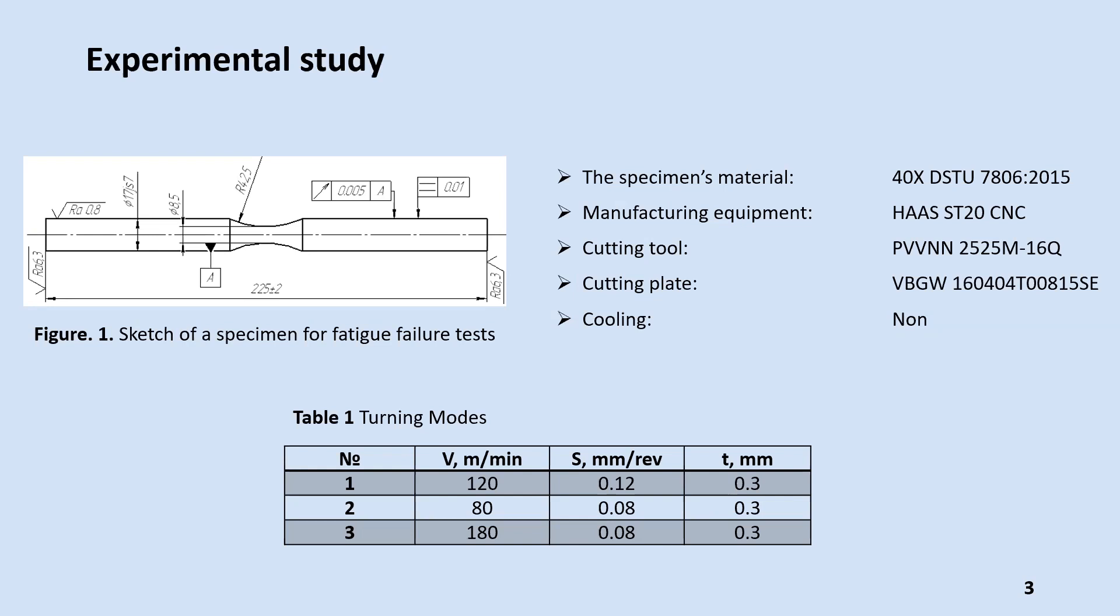To study the influence of technological conditions of turning and processing on their fatigue properties, smooth specimens of round cross-section from structural steel were used. The specimens were tested for fatigue failure on the machine MUI 6000 on the basis of 2×10^7 cycles with 20 Celsius temperature and rotation frequency of 2000 rpm.